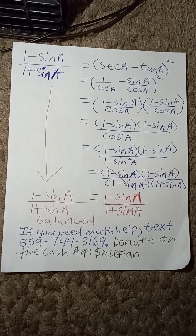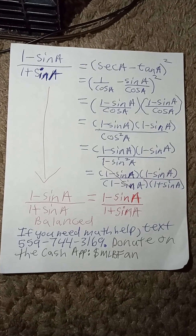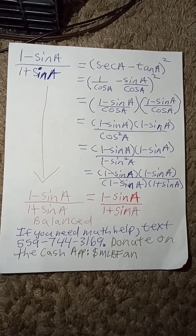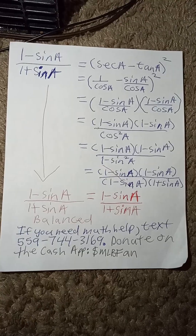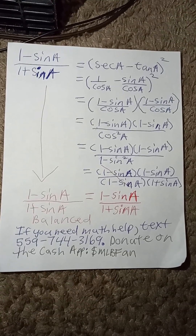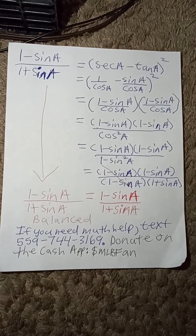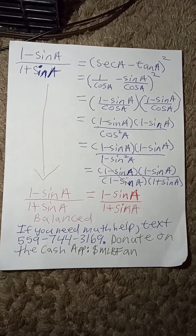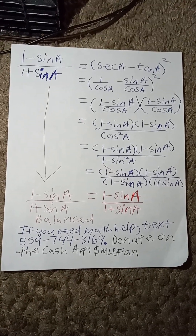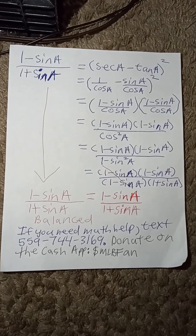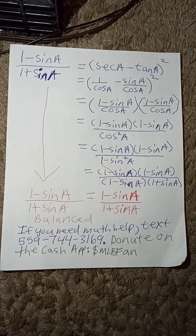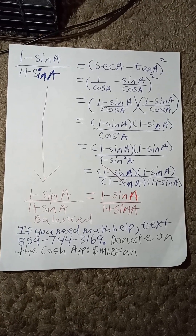Good evening, class. Today we are going to be working with verifying trigonometric identities. Here we see 1 minus sine a divided by 1 plus sine a is equal to secant a minus tan a, squared.